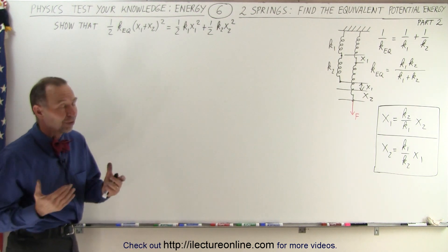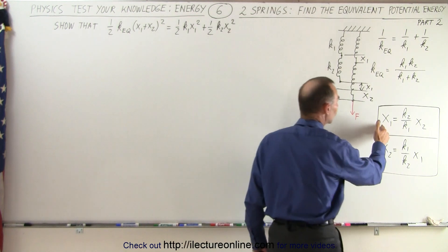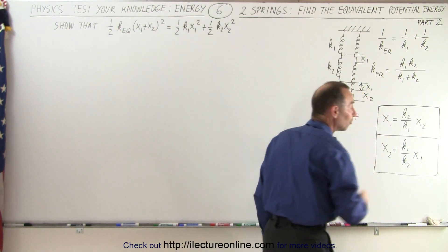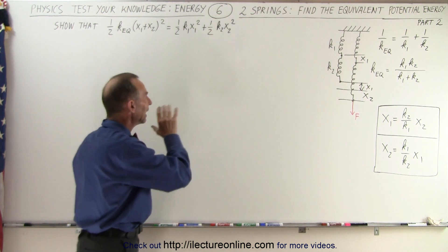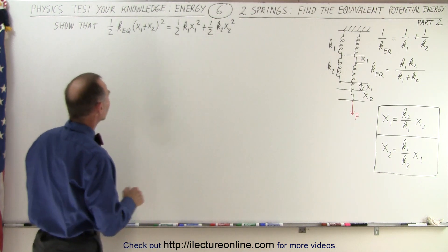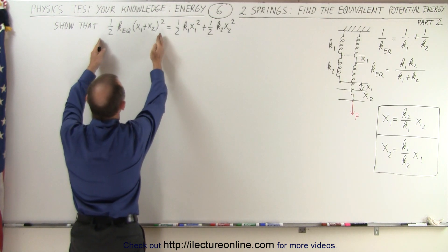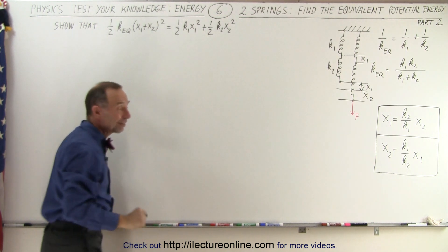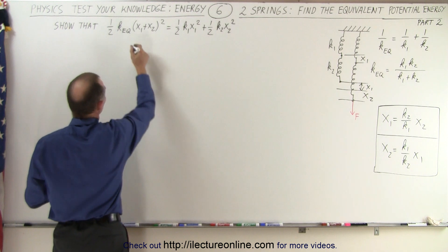In the previous video we found the relationship between x1 and x2 in terms of the spring constants, and we're going to utilize that in the second part of the problem. What we're going to do is rework the left side of this equation to make it look like the right side of the equation.